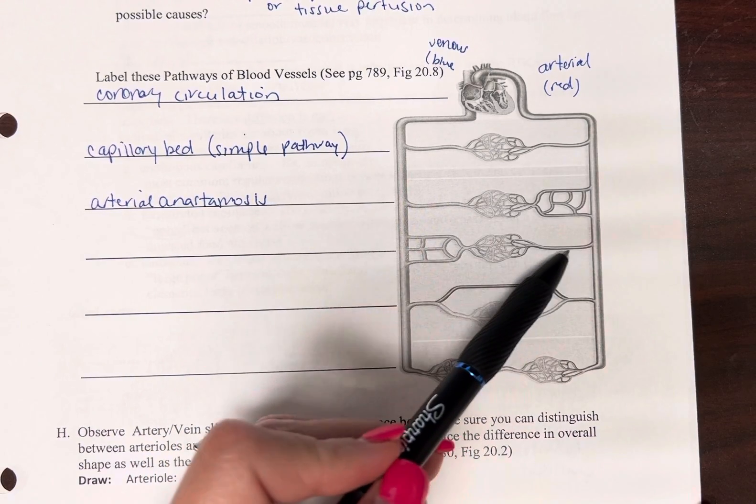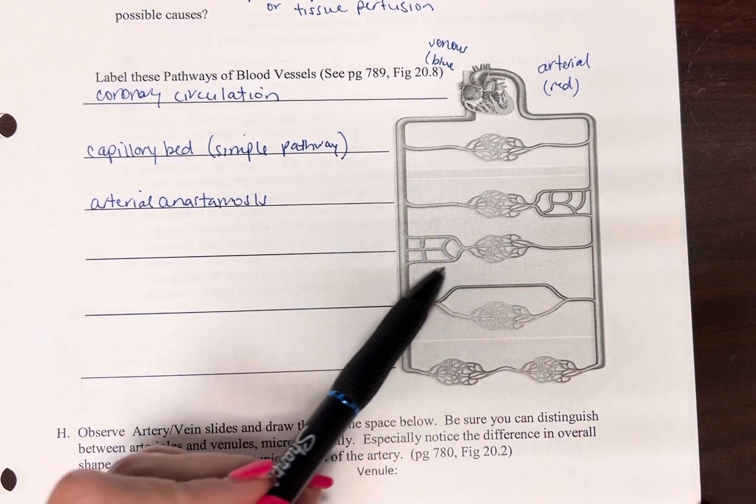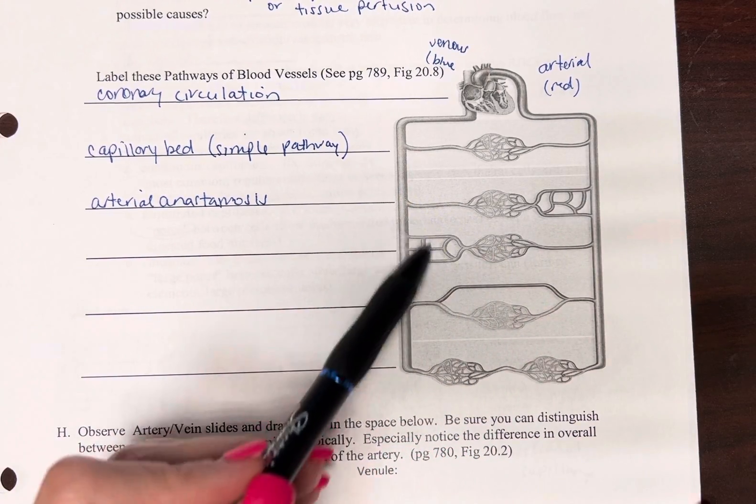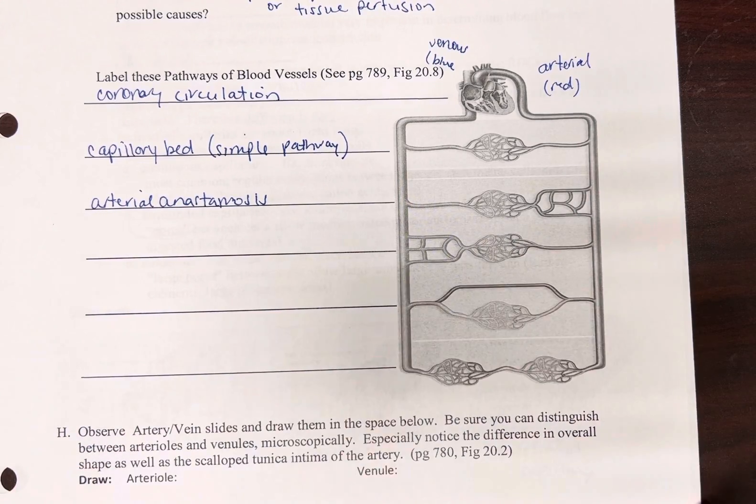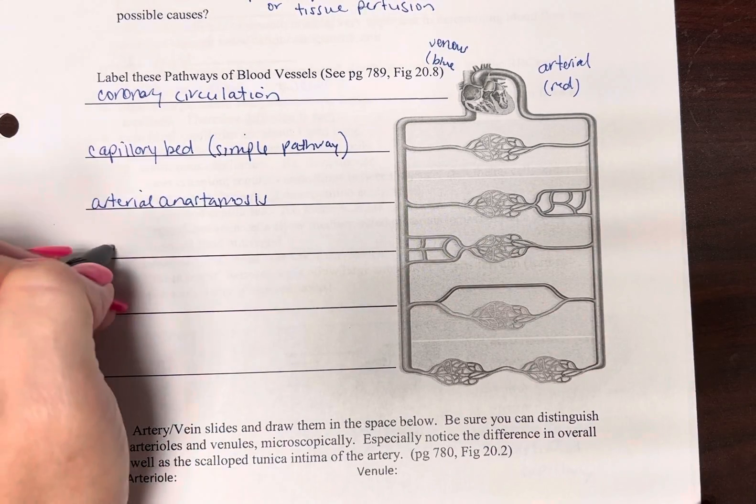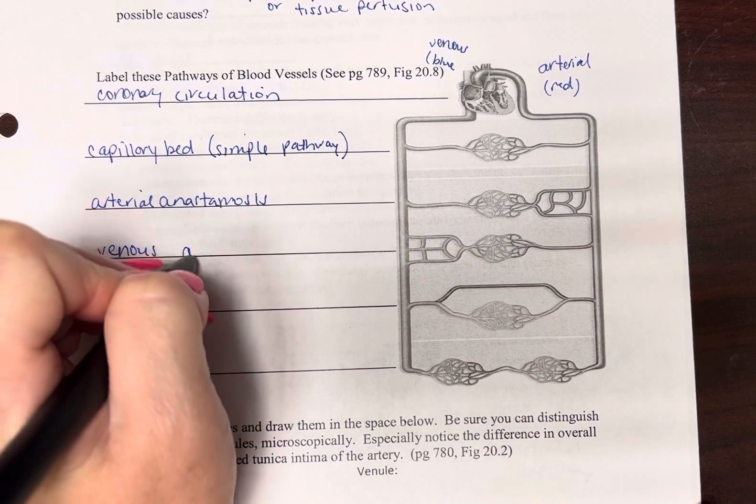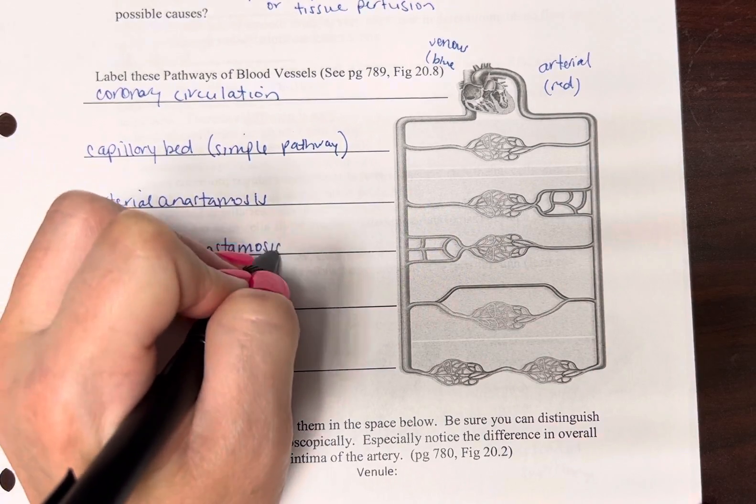All right, on this one, one way in, lots of ways out. So we have extra room at the venous end. So this is going to be the venous anastomosis.